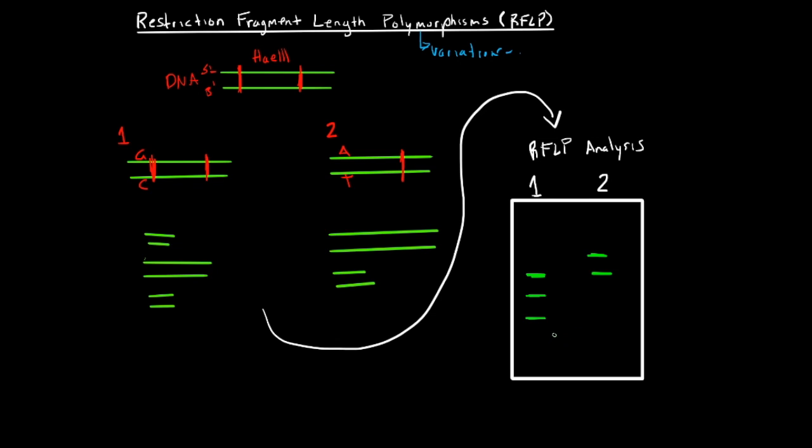So this example obviously assumes that son number one right here is homozygous for the A pattern, which let's say the A pattern is this, and this is B or number one or two. And son number two is homozygous for the B pattern. If they were heterozygous for the RFLP, they would display bands that were seen in both the A and the B pattern.